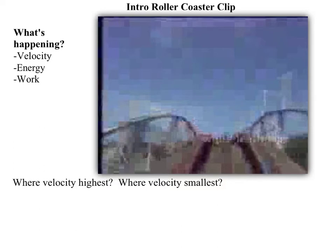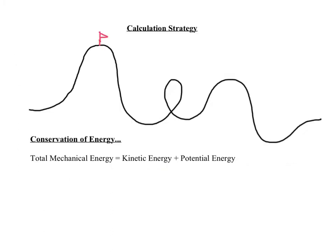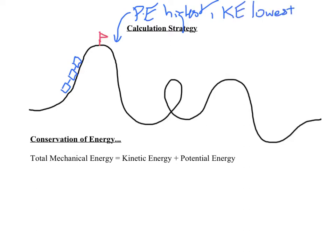I want to look at what's happening with our roller coaster throughout this experience — specifically where our velocity is going to be highest and smallest. Here's my rendition of a roller coaster. We have our little train heading up. We know the roller coaster is doing work on the train, applying a force, causing potential energy to increase. At the very top, potential energy is highest, and therefore kinetic energy is going to be lowest. That means velocity is going to be lowest at that top point.